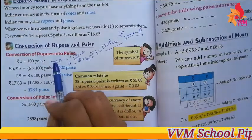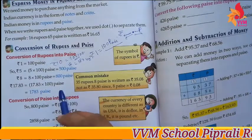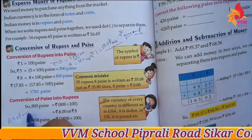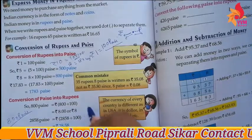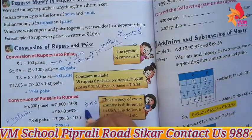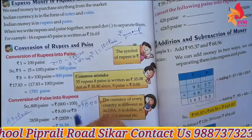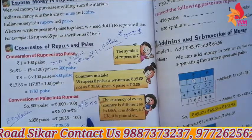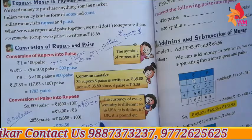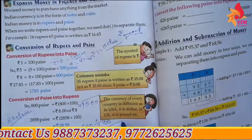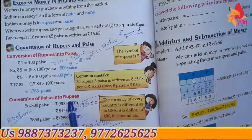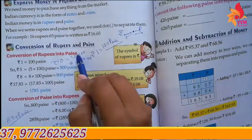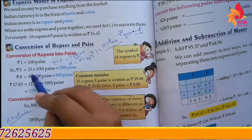To convert Paise into Rupees, we divide by 100. And to convert Rupees into Paise, we multiply by 100.